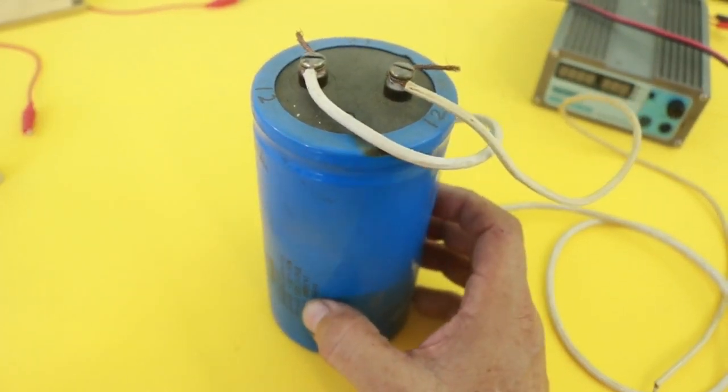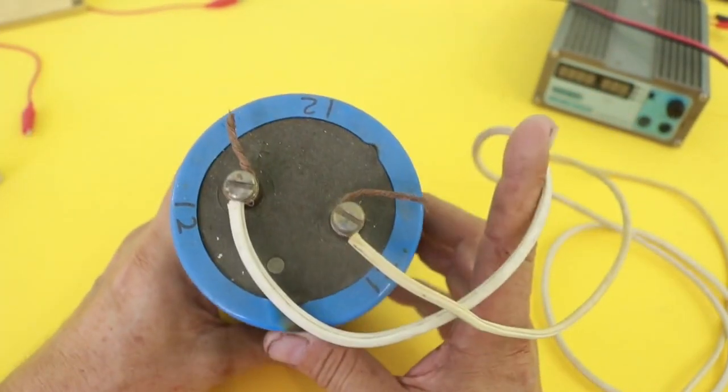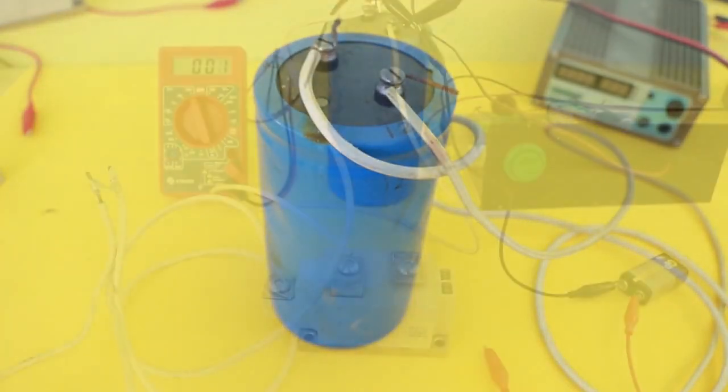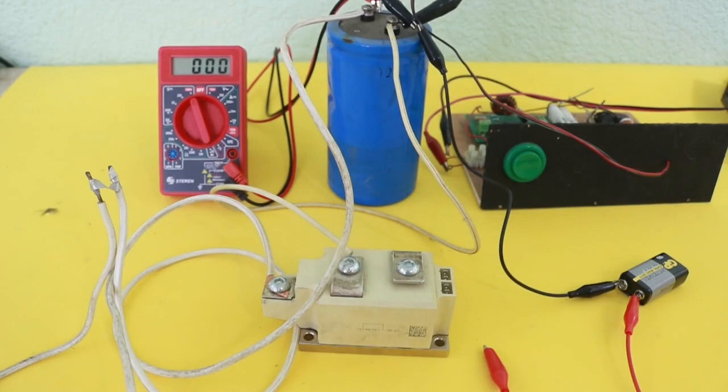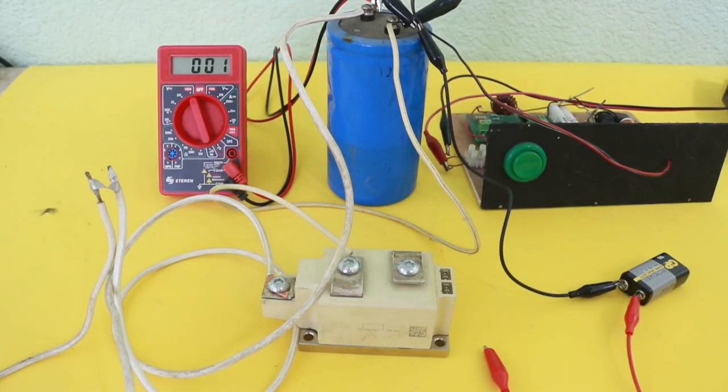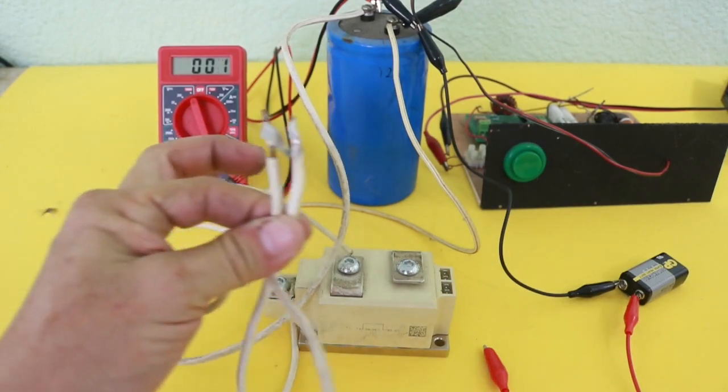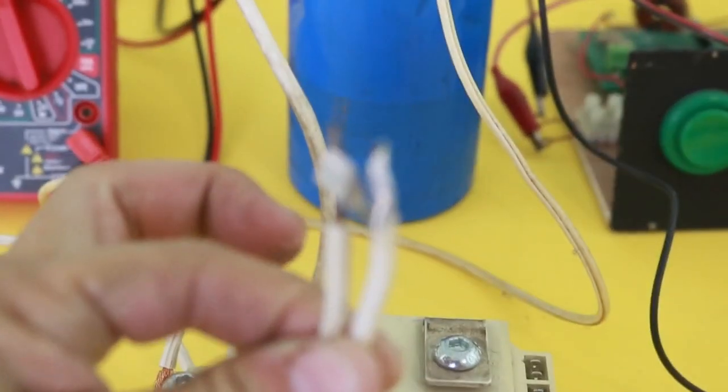But in the meantime, let's test the tyristor with a single of these caps. Okay, let's test the tyristor. I will discharge the high voltage capacitor on this little piece of aluminum foil.